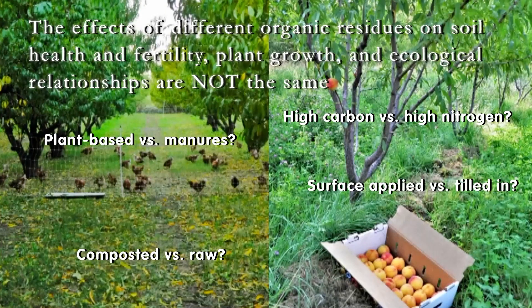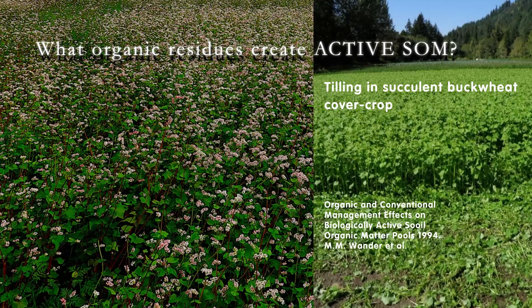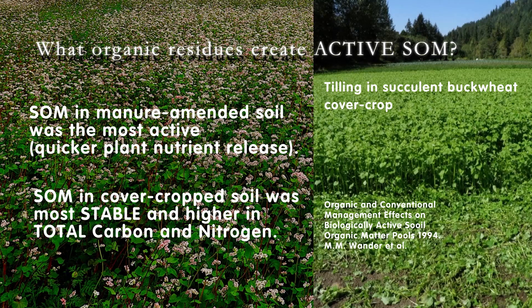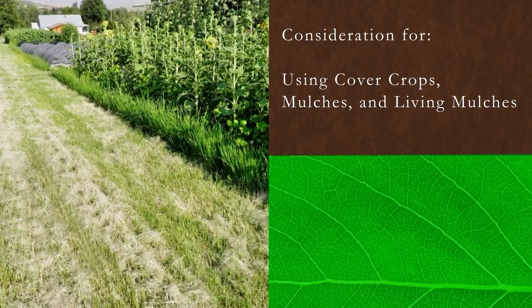We're going to look at plant-based versus manures, high carbon versus high nitrogen, composted versus raw, and surface-applied versus tilled in. In general, soil organic matter in manure-amended soils seems to be the most active, with quicker plant nutrient release. However, soil organic matter in cover crop soils — in this particular long-term study — was the most stable and highest in total carbon and nitrogen, though slower to create active soil organic matter.